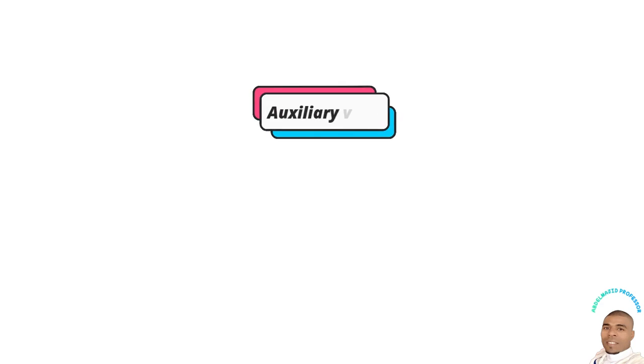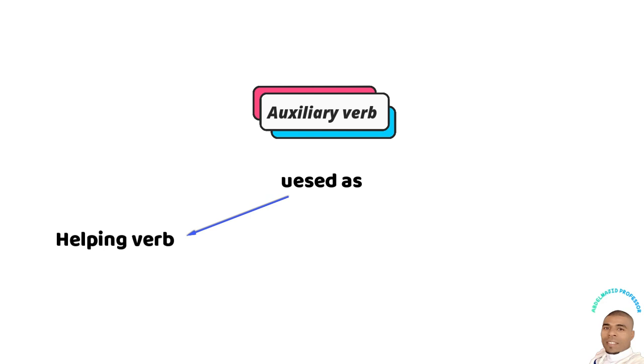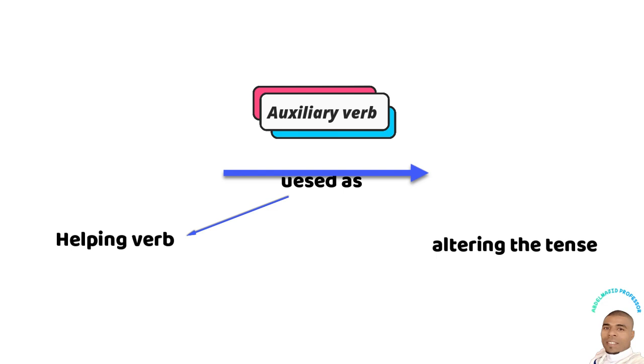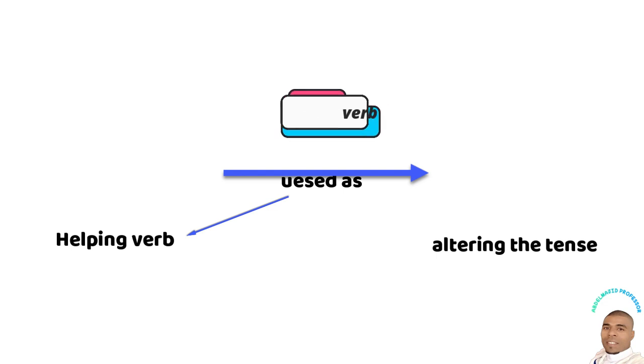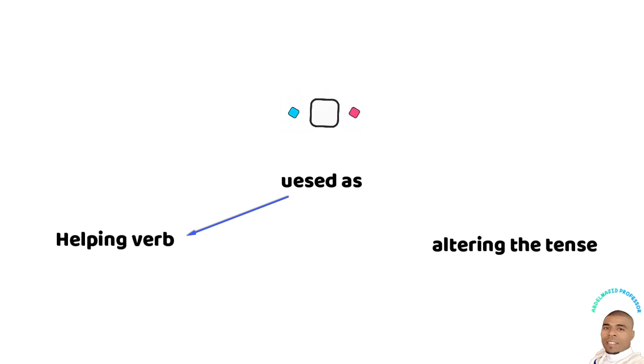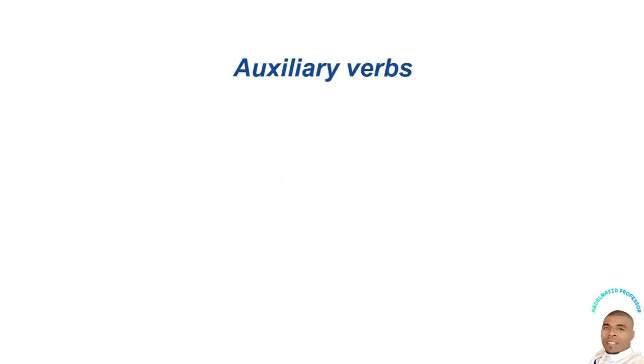So what is an auxiliary verb? An auxiliary verb is a verb that is used as a helping verb along with the main verb in a sentence to make it more meaningful. It is used to alter the tense, mood, or voice of the sentence. Let's look deeper into this definition.